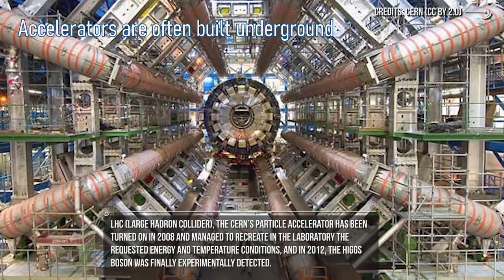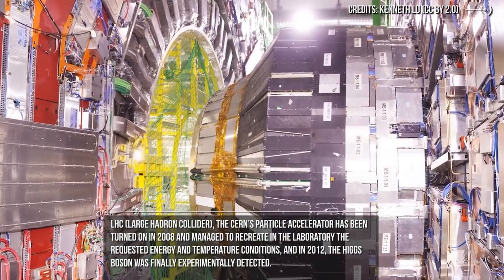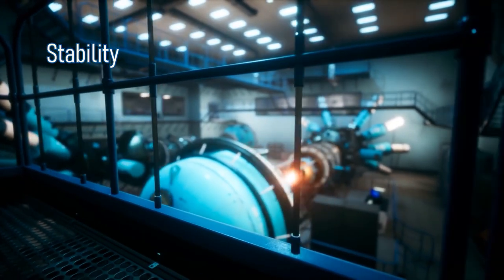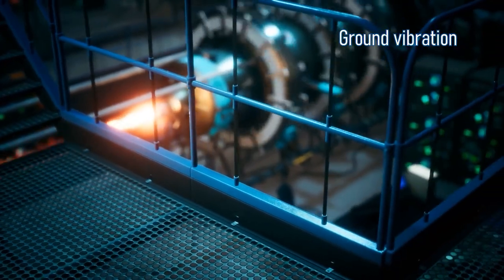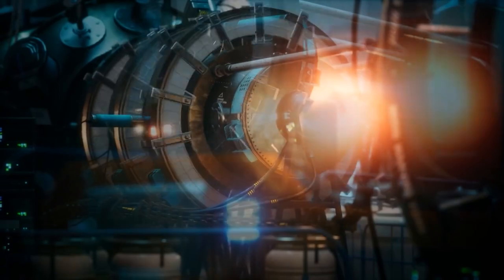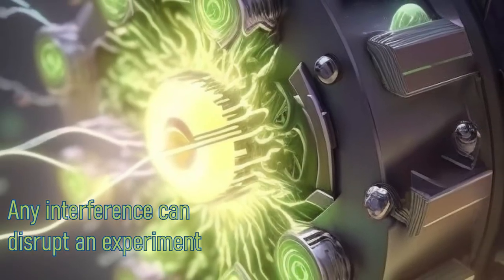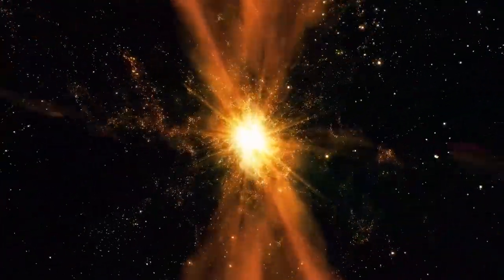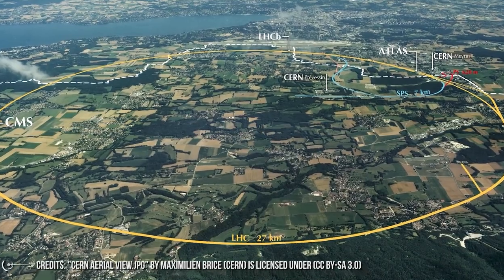Particle accelerators are often built underground for several reasons. First of all, radiation shielding. Particle accelerators produce high-energy particles and radiation as byproducts of their operation, which can be harmful to humans. By building underground, the Earth acts as a natural shield against this radiation, protecting both the environment and people nearby. Second, stability. Building a particle accelerator underground provides stability against the vibration, ambient noise, and disturbances that can occur above ground, such as ground vibration from nearby traffic, noise from nearby towns. These vibrations can interfere with the delicate measurements and experiments that take place within the accelerator.